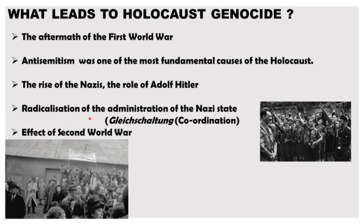The fourth reason was the radicalization of the Nazi state — Gleichschaltung, or coordination. This process of coordination was repeated through almost all aspects of government policy, which helped to align existing institutions to be sympathetic to Nazi ideology. This in turn allowed the Nazis to continue to push the boundaries and slowly radicalize persecution.